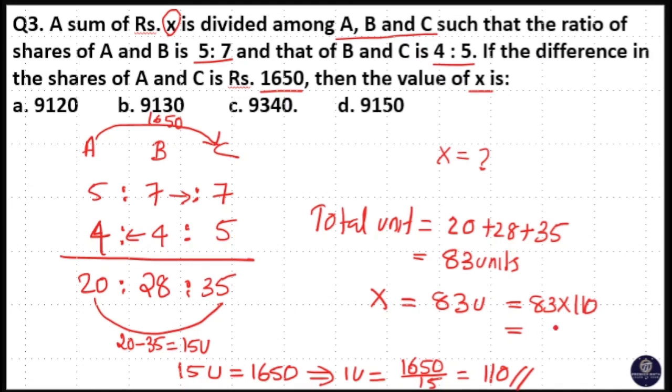When a number is multiplied with 11, that means 83 times 11, then 8 plus 3 is equal to 11. 1 carry over, 8 plus 1 is equal to 9. So, 9130 is your answer. Option B is your answer.